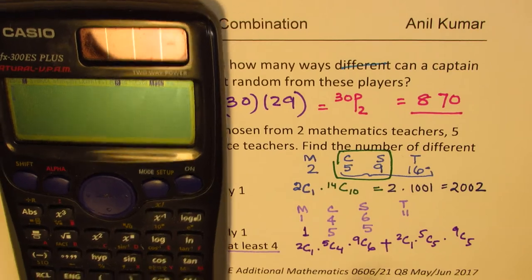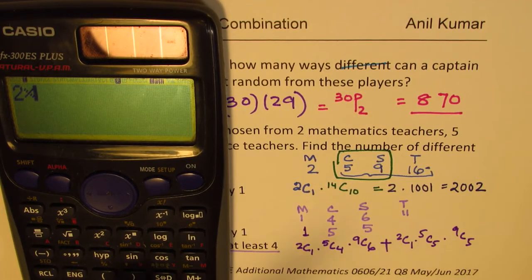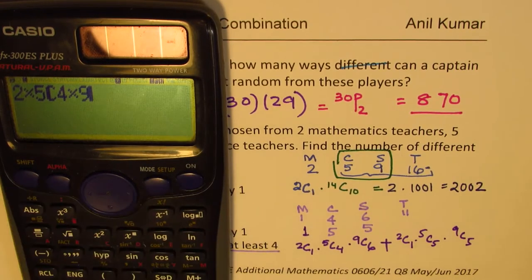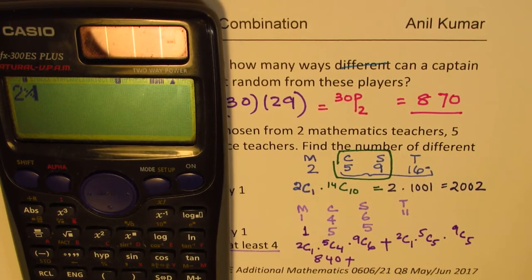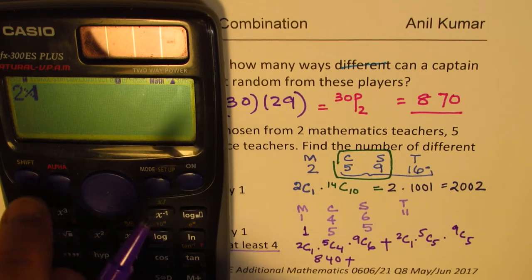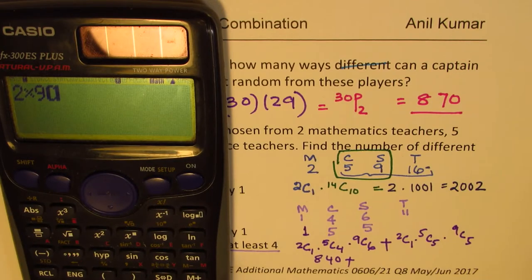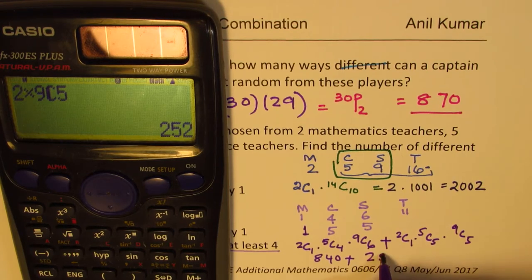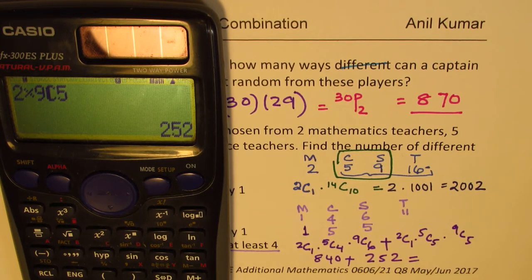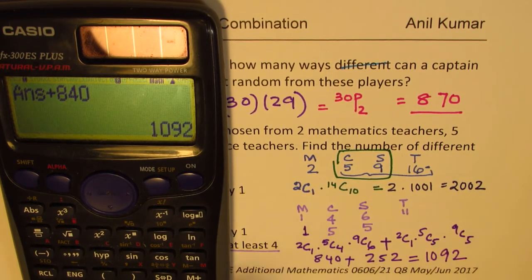So we have 2C1 is 2, so 2 times 5C4, and then we multiply that with 9C6, 9C6, that gives you 840. Plus this one, 2 times 5C1 is 1, 9C5. So we have 2C5 times 9C5, and that gives you 252. And then we are just going to add them plus 840, that gives you 1092 as our choice.